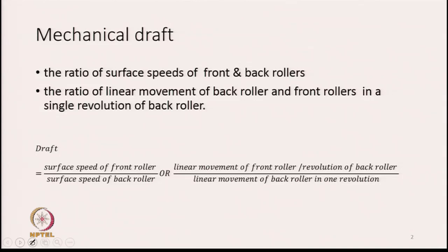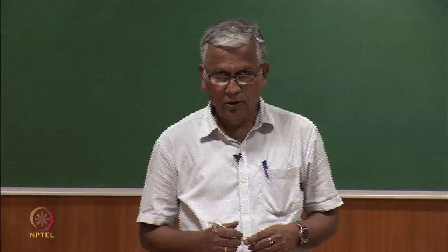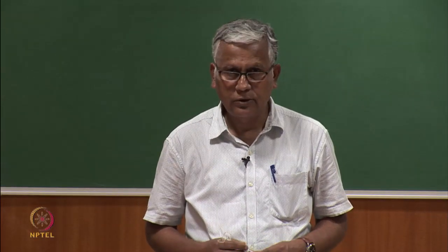The definition of draft is the surface speed of the front roller divided by the surface speed of the back roller, or equivalently, the linear movement of the front roller per revolution of the back roller divided by the linear movement of the back roller in one revolution. In the mechanical draft calculation, the linear density or hank of the sliver does not come into the picture.